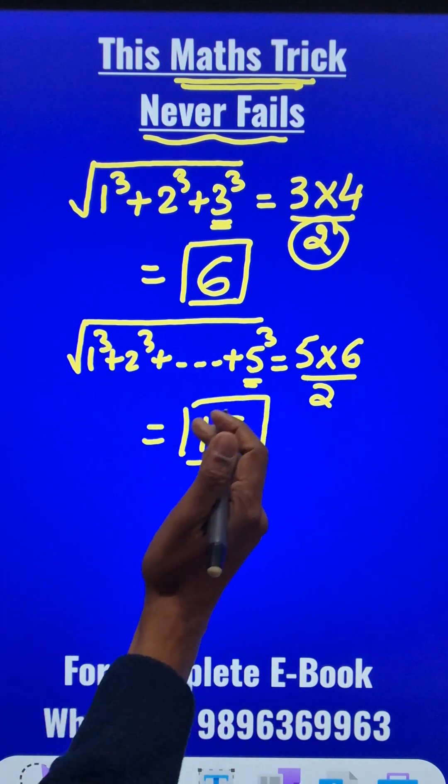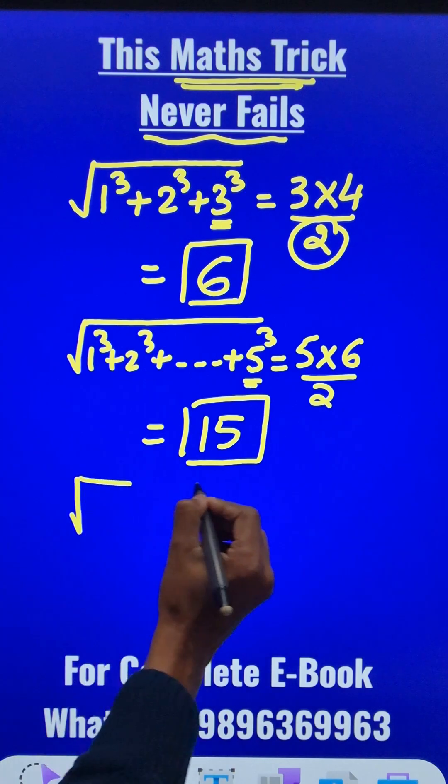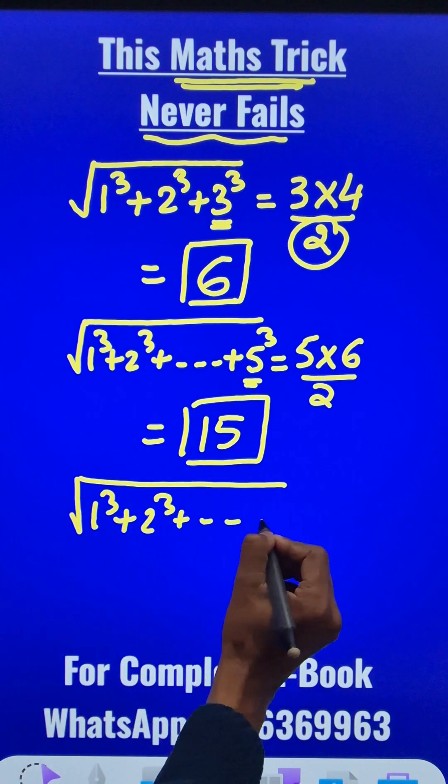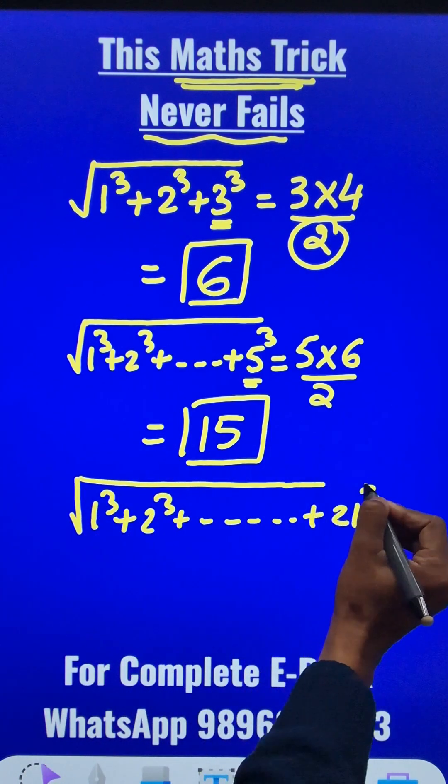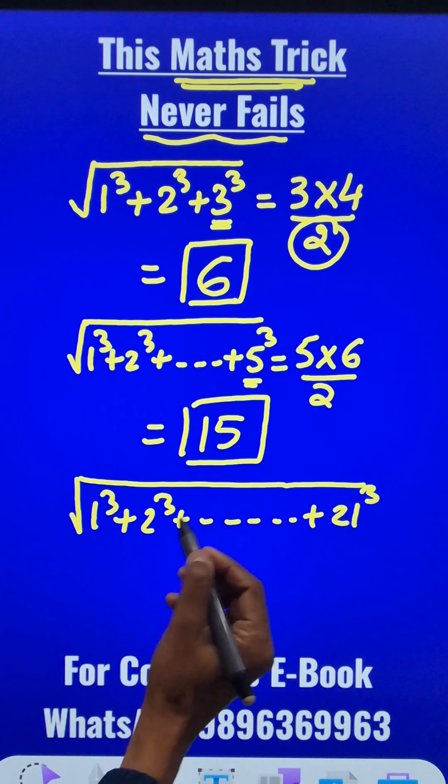How about a big number like 21? 1³ + 2³ + ... + 21³. Very difficult, right? But you can do it in 3 seconds.